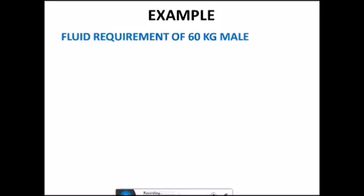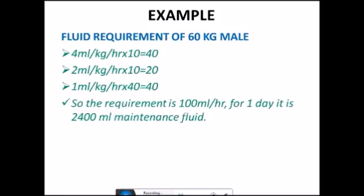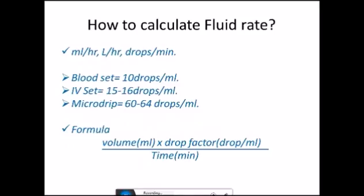Now we'll see the example. Fluid requirement of 60 kg male will be 4 ml per kg per hour for 10 kgs first, that is 40. For next 10 kg it is 20. For next remaining 40 kgs, so it is 1 ml per kg per hour, that is 40. So 40 plus 20 plus 40 is 100 ml per hour, multiply by 24, it is 2400 ml. Alternatively, weight plus 40 formula: weight is 60 kg plus 40, so 100 ml per hour. Again it comes out to be the same.